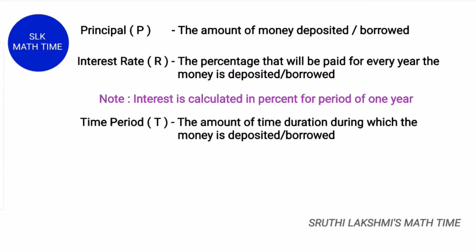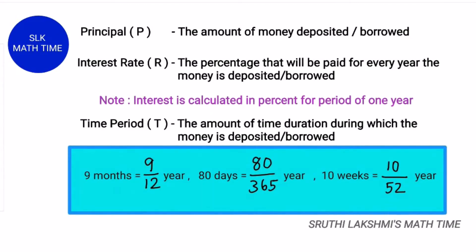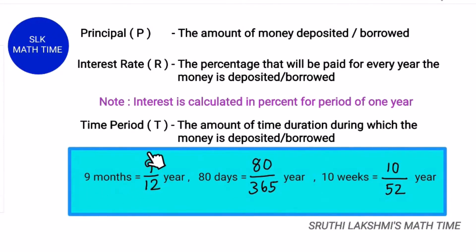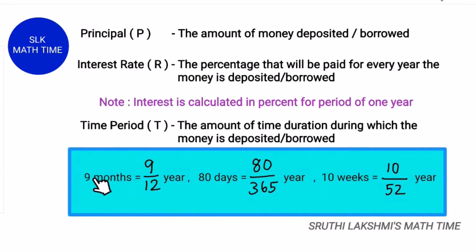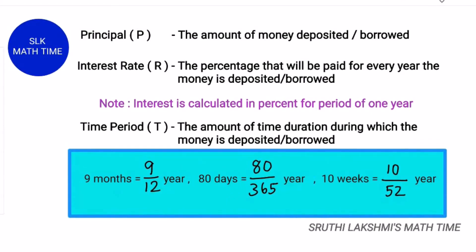Time or duration is the amount of time that you want to deposit or borrow the money. If you are given weeks, months, or days, write a fraction to calculate interest in terms of years. So, 9 months is 9/12 of a year because there are 12 months in a year. For 80 days, there are 365 days in a year, so it is 80/365.